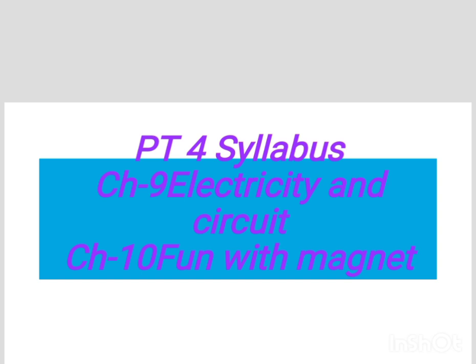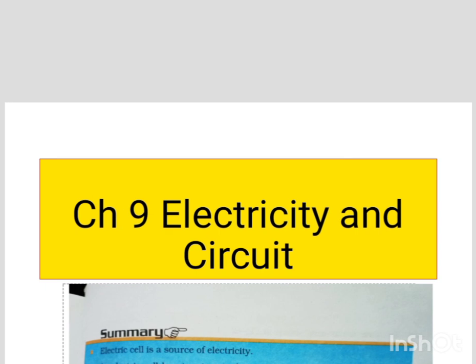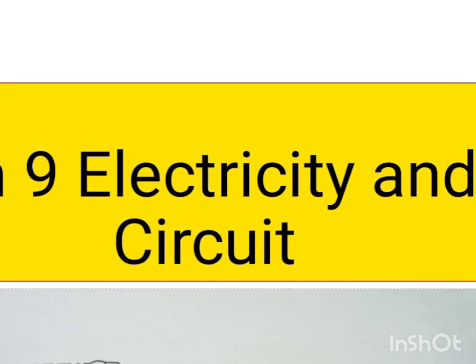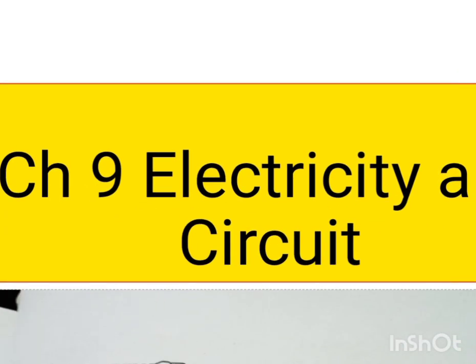Let's revise chapter number nine, Electricity and Circuit. Let's revise the summary of this chapter. First point: an electric cell is a source of electricity, which means in an electric cell there is a chemical that converts chemical energy into electrical energy.